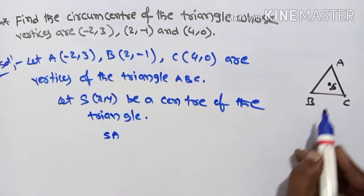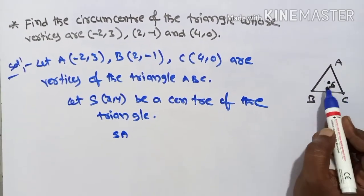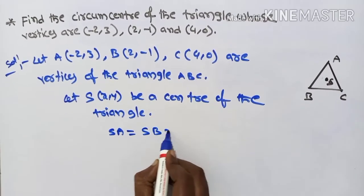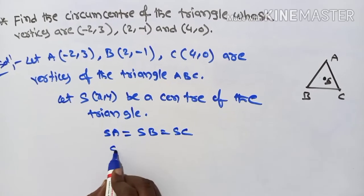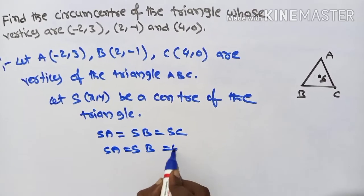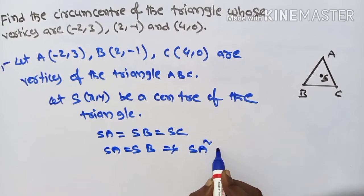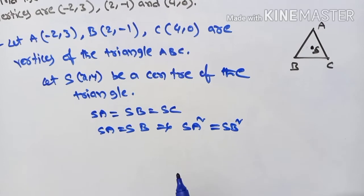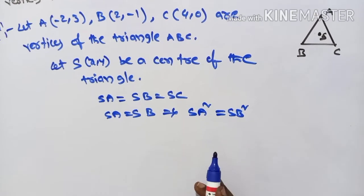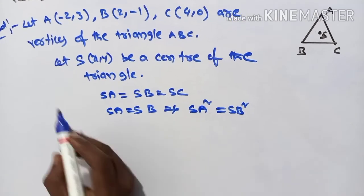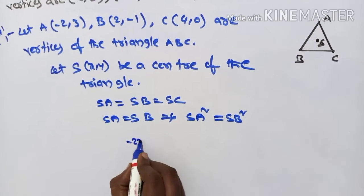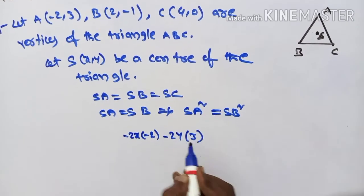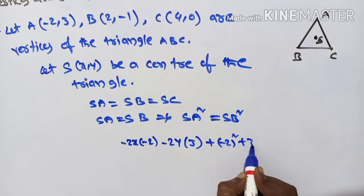Let S(x,y) be the circumcenter. SA = SB = SC. Taking SA = SB, which implies SA² = SB². SA² = -2x(-2) - 2y(3) + (-2)² + 3² = 4x - 6y + 13. SB² = -2x(2) - 2y(-1) + 2² + (-1)² = -4x + 2y + 5.